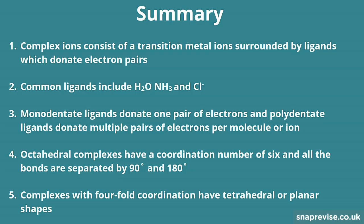That's all for this video, guys, so let's summarise. Complex ions consist of a transition metal surrounded by ligands which donate electron pairs. Common ligands include water, ammonia and chloride ions.